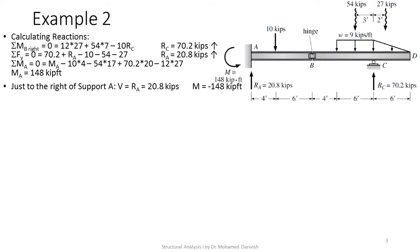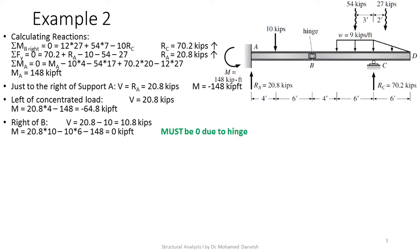A section left of the concentrated load gives the same shear, and M equals 20.8 times 4 equals 83.2 kip·ft. A section between the 10-kip load and point B gives shear force of 20.8 minus 10 equals 10.8 kips. The moment there is 20.8 times 10 minus 10 times 6 equals 148 kip·ft.